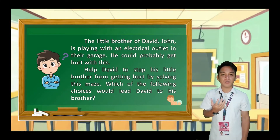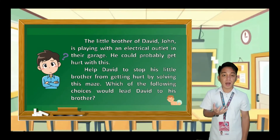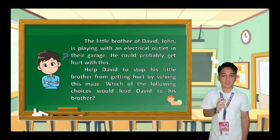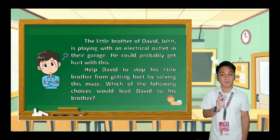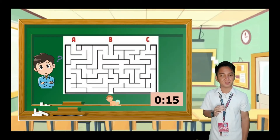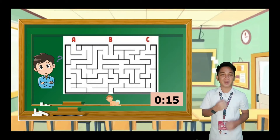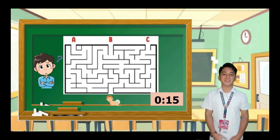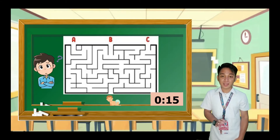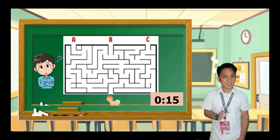The little brother of David, namely John, is playing with an electrical outlet in their garage. He could probably get hurt. Help David stop his little brother from getting hurt by solving this maze. Which of the following choices would lead David to his brother? You are given 15 seconds to solve the given problem. Timer starts now.